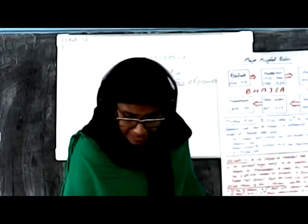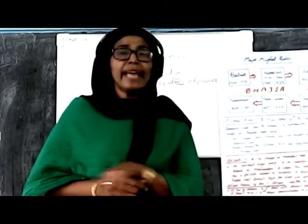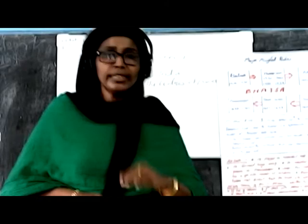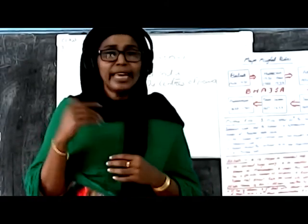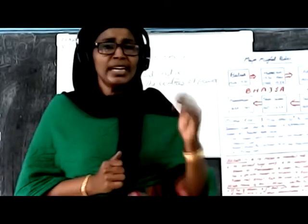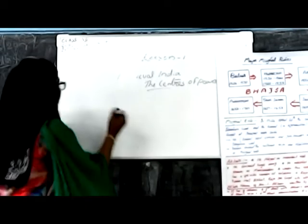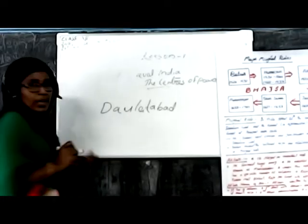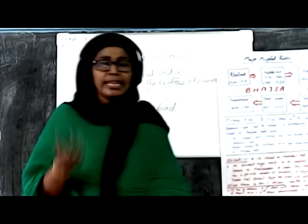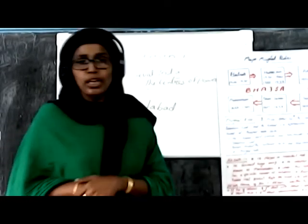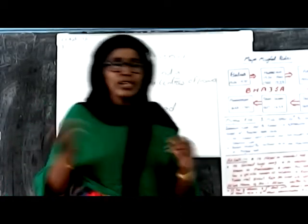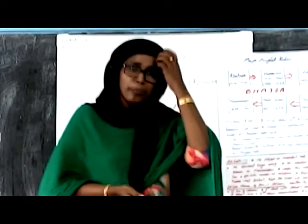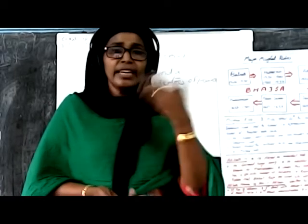Muhammad bin Tughluq expanded his territory. He decided to shift his capital from Delhi and renamed it Daulatabad — spelled D-A-U-L-A-T-A-B-A-D. However, he re-thought the decision because the people living in Delhi were not in a state to move, so he changed the capital back to Delhi.